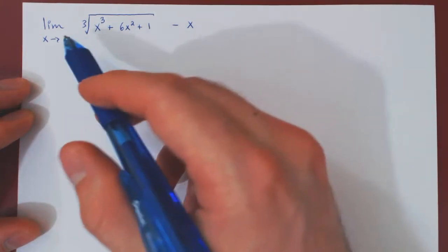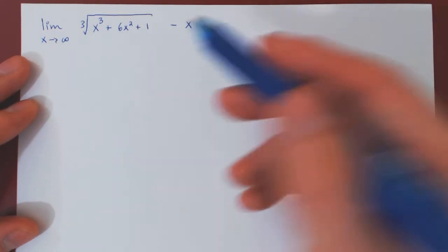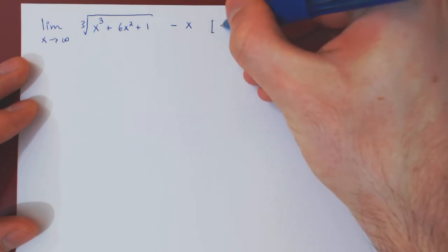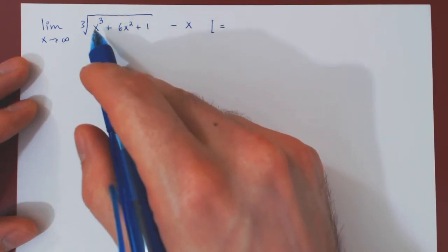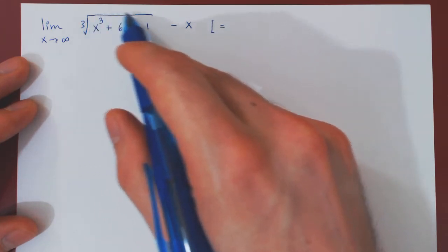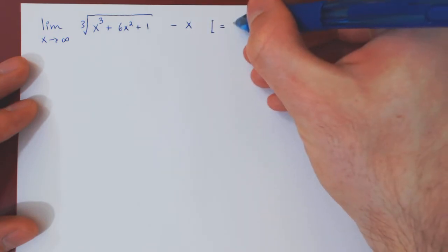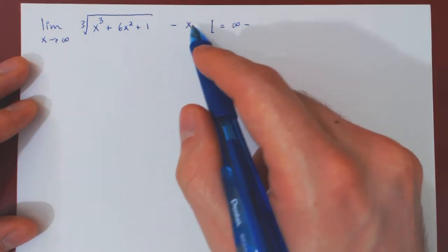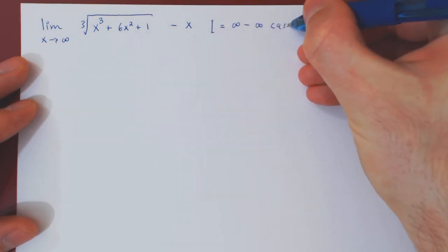In this video, we want to find a limit using L'Hôpital's rule. As always, when we have a limit, let's look at what kind of case we're dealing with. As x tends to infinity, the argument of the cube root clearly tends to infinity. The cube root of something which tends to infinity will also tend to infinity. Minus, as x tends to infinity, x tends to infinity. So we have an infinity minus infinity case.